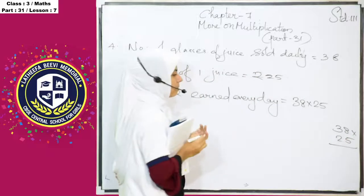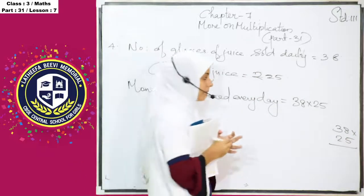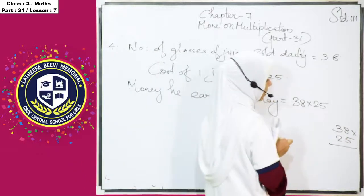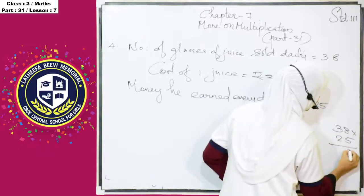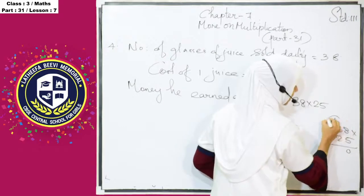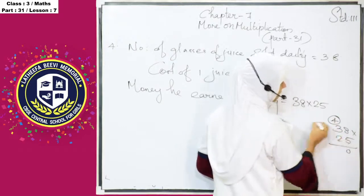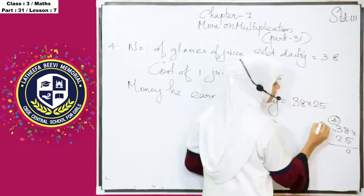Cost of one juice is equal to rupees 25 and money he earned every day is equal to 38 into 25. This is also based on multiplication of two digit number by two digit number. 5, 8's are, we know that 5, 8's are 40. We have to write 0 here, 4 is carry over. And 5, 3's are 15, 15 plus 4, 19.